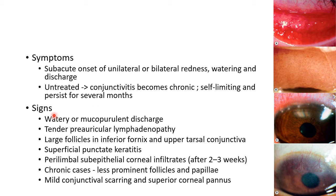The signs of chlamydial conjunctivitis include watery or mucopurulent discharge and tender pre-auricular lymphadenopathy. There will be large follicles in the inferior fornix and upper tarsal conjunctiva. There can be superficial punctate keratitis. There will be perilimbal sub-epithelial corneal infiltrates occurring after 2-3 weeks of infection, as shown in the picture.